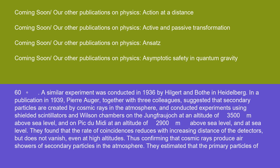A similar experiment was conducted in 1936 by Hilgert and Bode in Heidelberg. In a publication in 1939, Pierre Auger, together with three colleagues, suggested that secondary particles are created by cosmic rays in the atmosphere.